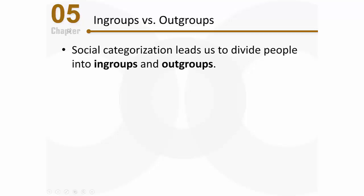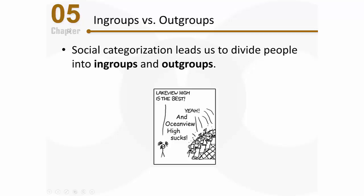The social categorization process leads us to divide people into in-groups and out-groups. In-groups are groups we identify with — sharing characteristics like gender, religion, or hometown. Out-groups are the opposite: groups we don't identify with, where we feel like outsiders. A good example is a pep rally where the cheerleader says 'Lakeview High is the best!' and the crowd adds 'Oceanview High sucks!' — clear examples of in-group favoritism and out-group denigration.